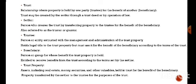The trustee holds legal title to the trust property but must use it for the benefit of the beneficiary according to the terms of the trust. A beneficiary is a person or group for whose benefit the trust property is held, entitled to receive benefits from the trust according to the terms set by the settlor.